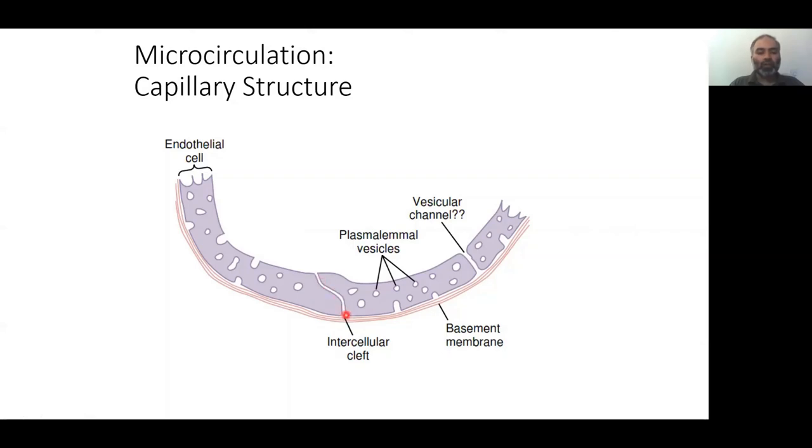The blood is kept separate from the brain tissue via this configuration of tight junctions between endothelial cells in the brain. This is one example of how endothelial cells are configured. Its opposite is the liver.